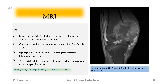MRI T2 features: Heterogeneous high signal with areas of low signal intensity — variable — due to hemosiderin or fibrosis. If an aneurysmal bone cyst component is present, fluid-fluid levels can be seen. High signal in adjacent bone marrow is thought to represent inflammatory edema. On T1C+Gd, solid components will enhance, helping differentiate from aneurysmal bone cysts.